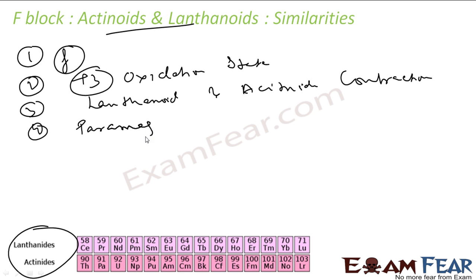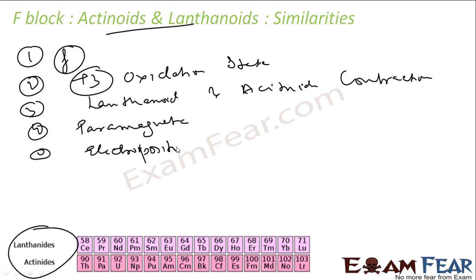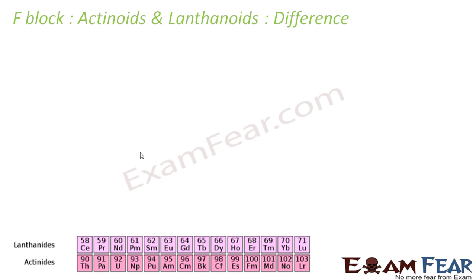In both, most of them are paramagnetic, so paramagnetism is also one common feature. In fact, most of them show electropositive character — positive oxidation state. Both of these are reactive. These are some of the common things between the lanthanides and actinides. They also have some differences.